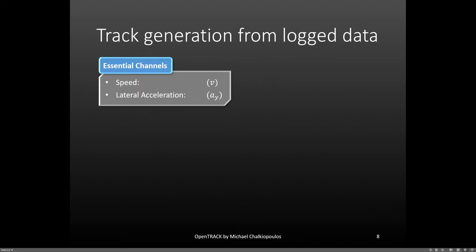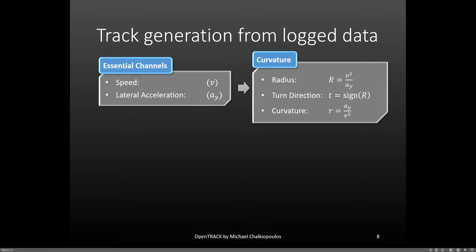We will see what the segment or section angle is in a bit when we talk about the map creation. Let's now talk about the other end of the spectrum, log data. To create a map from log data, we need speed and lateral acceleration as a bare minimum to define the shape.